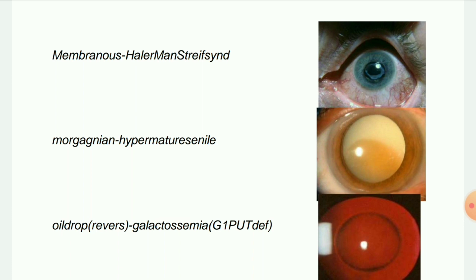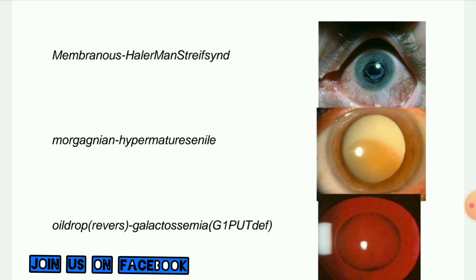Next image: Morgagnian hypermature senile cataract. In this cataract, the complete cortex is liquefied and appears milky white in color. The nucleus settles at the bottom, and calcium deposits may also be seen on the lens capsule.